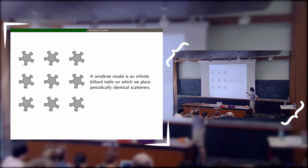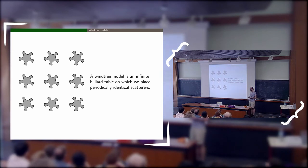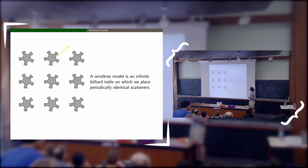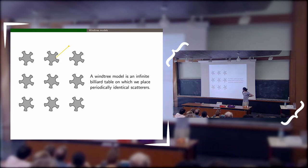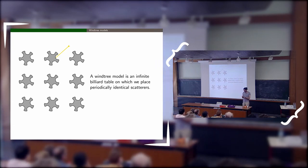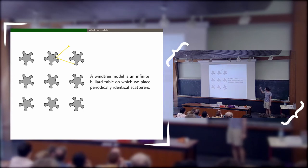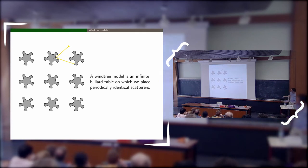You pick some obstacle of any shape and repeat it periodically on the plane — both horizontally and vertically. The dynamical system is defined as follows: you take any point on the plane outside the obstacles and one direction, then follow that direction in a straight line until you hit an obstacle. Then you use the reflection law of optics: you look at the normal vector of the obstacle and reflect with the same angle.